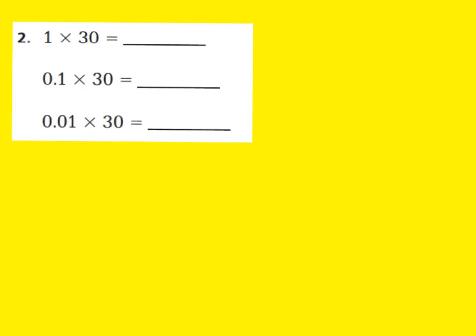Let's begin, boys and girls, at question number 2. Question number 2 says 1 times 30. We're going to start off by answering that. We know the identity property means that our product would be 30. Now I'm going to place a decimal point right after that, because I know it's 30 wholes. It's in my 1's and 10's place.